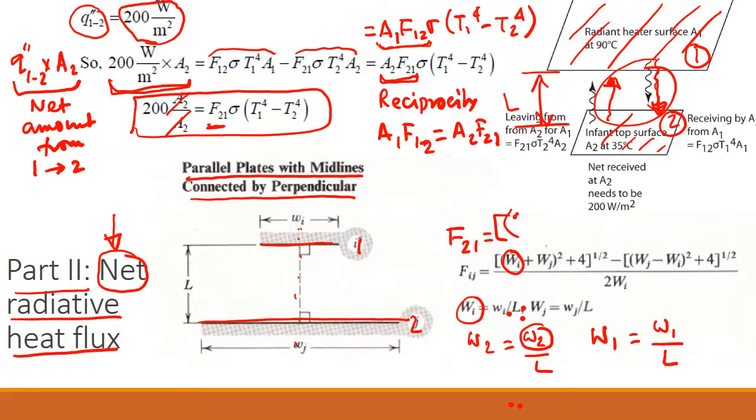Where W2 is this distance, which is equal to 0.15 meter, and W1 is equal to 0.3 meters.